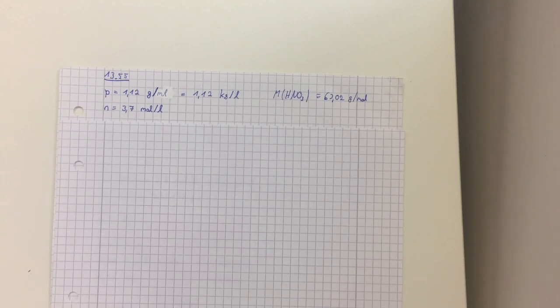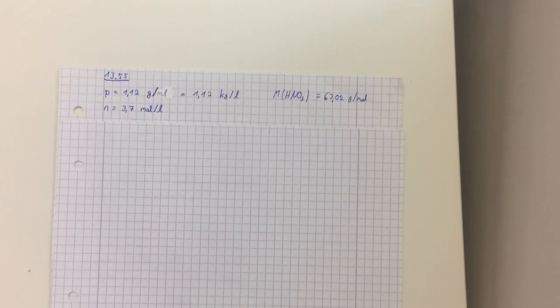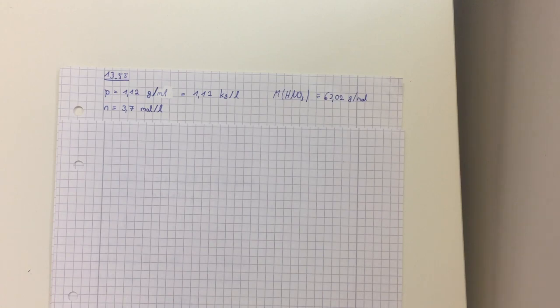Hello, today I'm going to explain how to solve exercise number 13.55. The exercise is: commercial aqueous nitric acid has a density of 1.12 grams per milliliter and a molarity of 3.7. Calculate the percent HNO3 by mass in the solution.